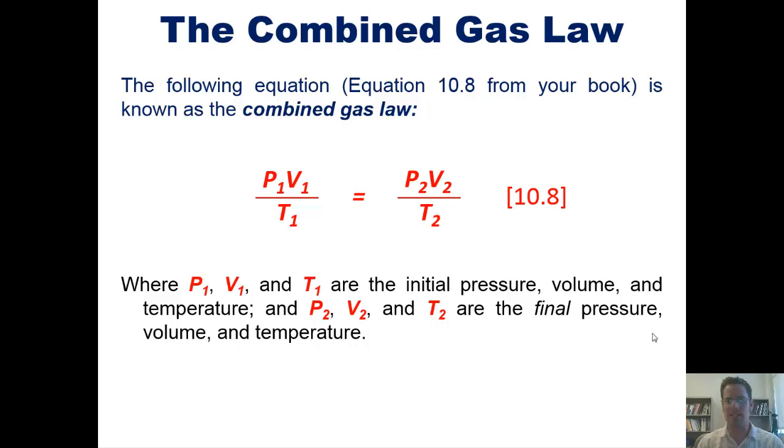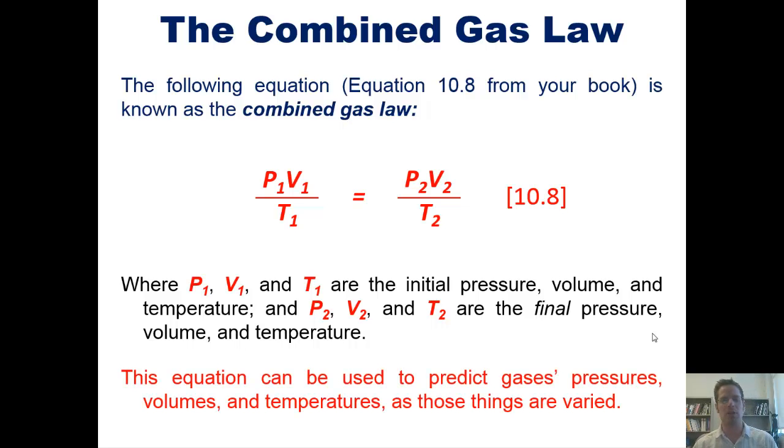So P1, V1, and T1 are all initial pressure, volume, and temperatures, while P2, V2, and T2 are all final pressure, volumes, and temperatures. This equation can be used to predict gas's pressures, volumes, and temperatures as those things are varied.